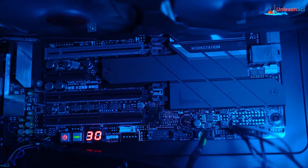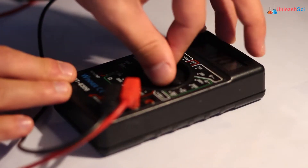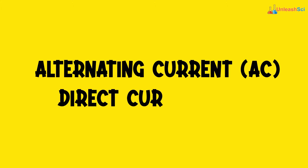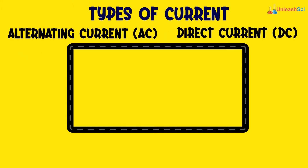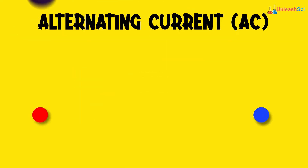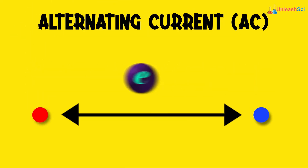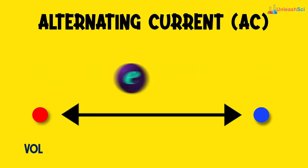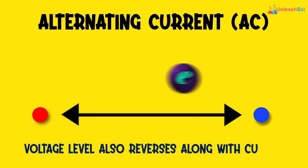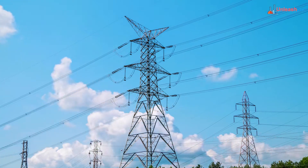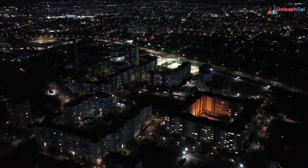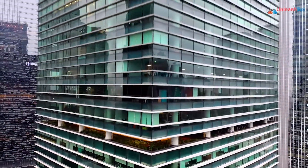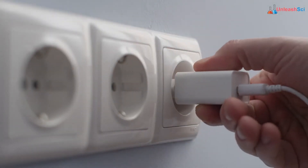Now, what is the difference between the two and what they apply to? Both alternating current, AC, and direct current, DC, describe the types of current flow in a circuit. The electric charge in alternating current moves back and forth with the changing magnetic field. As a result, the voltage level also reverses along with the current. Alternating current is used to deliver power to houses, offices and commercial buildings. This is the type of electricity you get from the wall sockets at home.